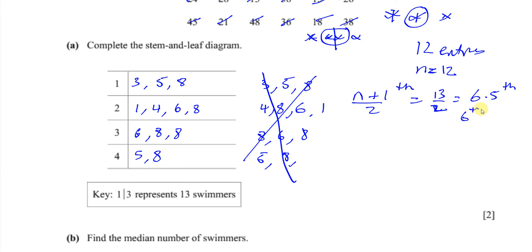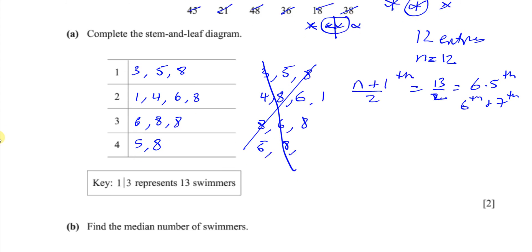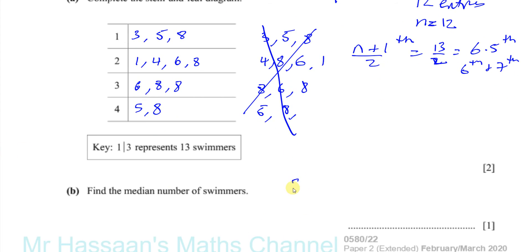If you count along here, that's 1, 2, 3, 4, 5, 6. So it's 26 and 28. So the median number of swimmers is going to be 26 plus 28 divided by 2. Halfway between 26 and 28 is 27. If you add them together and divide by 2, you're going to get 27. So the median number of swimmers is 27.